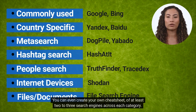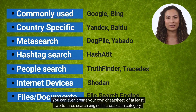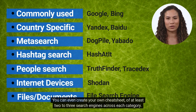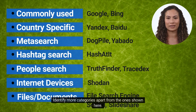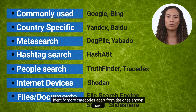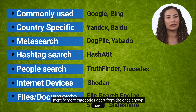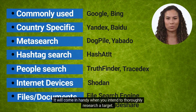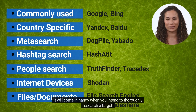You can even create your own cheat sheet of at least two to three search engines across each category. Identify more categories apart from the ones shown here — it will come in handy when you intend to thoroughly research a target.